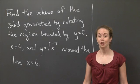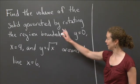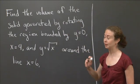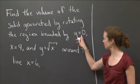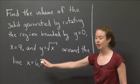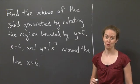Welcome back to recitation. In this video, we're going to do another solid of revolution problem. What I'd like to do is find the volume of the solid generated by rotating the region bounded by y=0, x=4, and y=√x around the line x=6. You can choose your favorite method to do this.